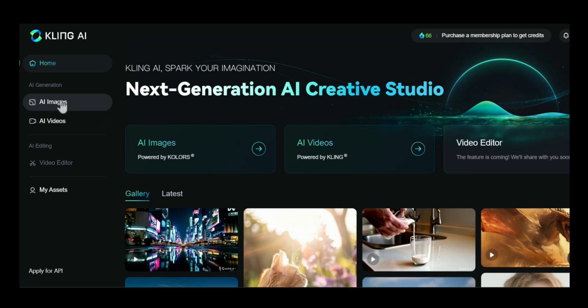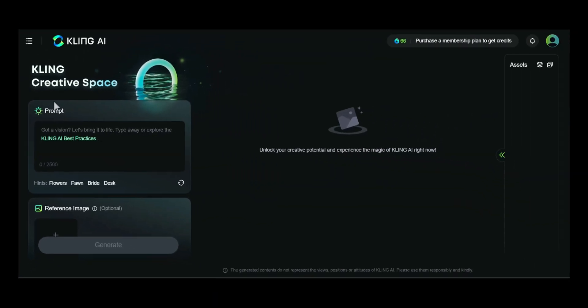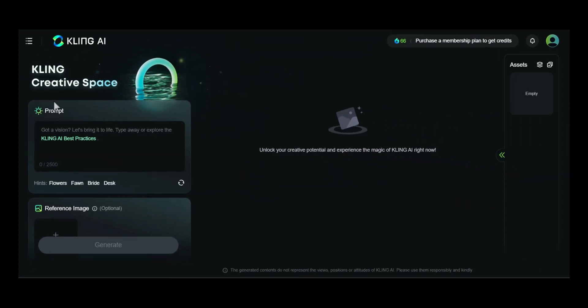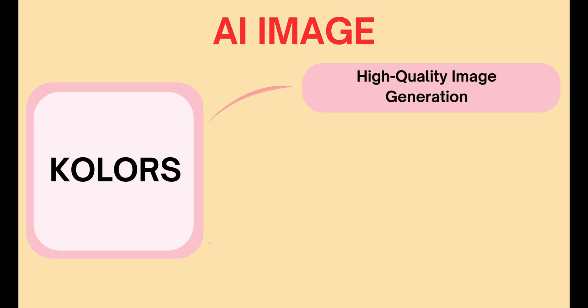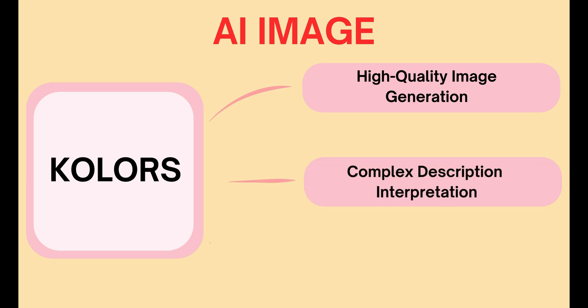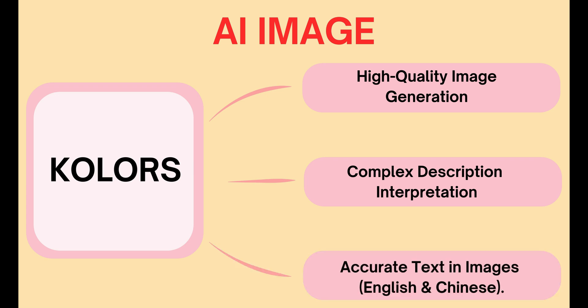First up is the AI Image feature. To get started, simply click on the AI Image section on the main interface. Here is the interface for the AI Image feature — quite simple, isn't it? AI Image in Kling AI uses a model called Kolors, known for its ability to generate high-quality images and accurately understand complex descriptions. Notably, it is the first model capable of creating images with precise text in both English and Chinese, making it ideal for logos, signs, and other text-based elements.